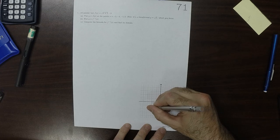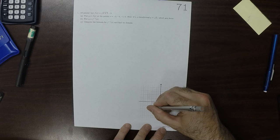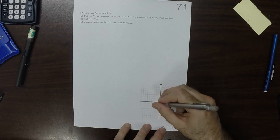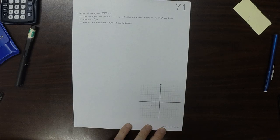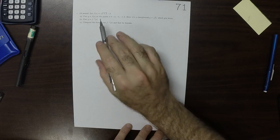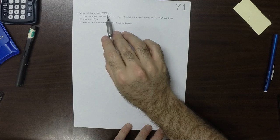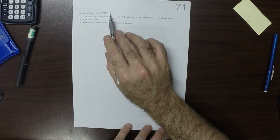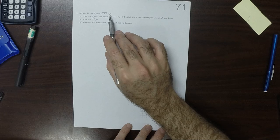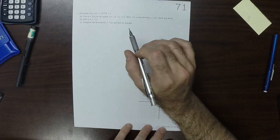If you plug in negative 4, then you'll go up 1. If you plug in negative 1, so negative 1 plus 5 is 4. Square root of that is 2, minus 3 is negative 1. So negative 1, negative 1.